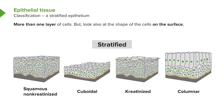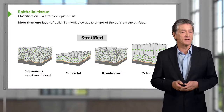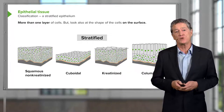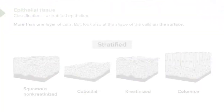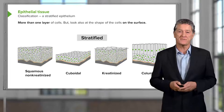When the epithelium has many cell layers, not just one, we call it stratified. We further extend that classification depending on the shape of the surface cells. They could be squamous, giving stratified squamous non-keratinised epithelium. Surface cells may be cuboidal, giving stratified cuboidal epithelium. As seen in skin, surface cells may be keratinised — stratified keratinised epithelium. Rarely, surface cells are columnar, giving a stratified columnar epithelium.